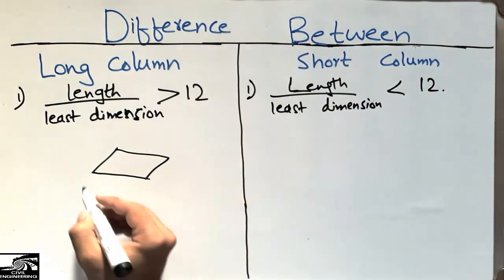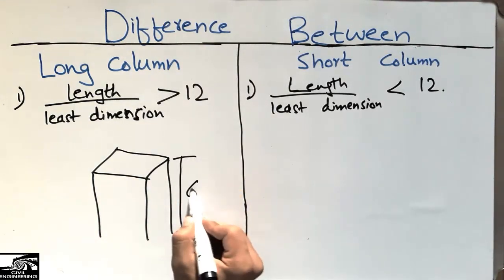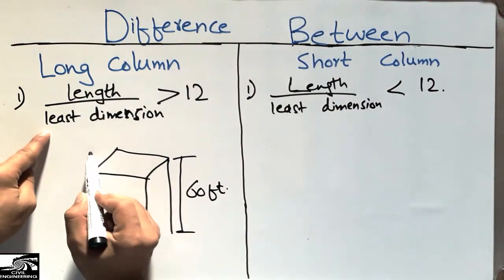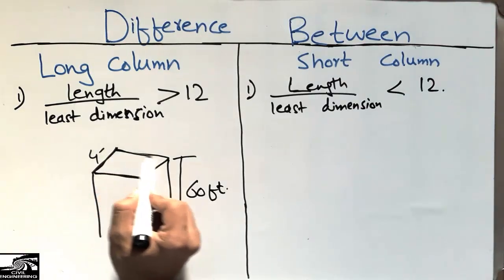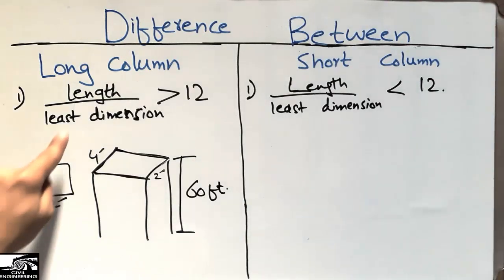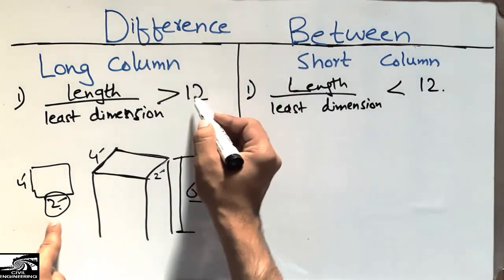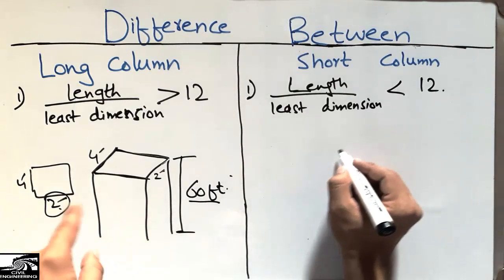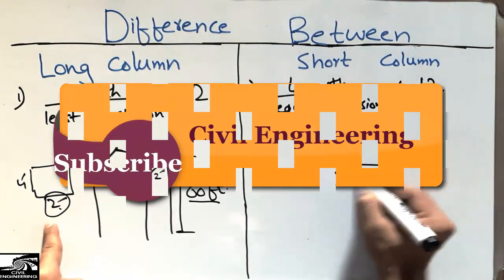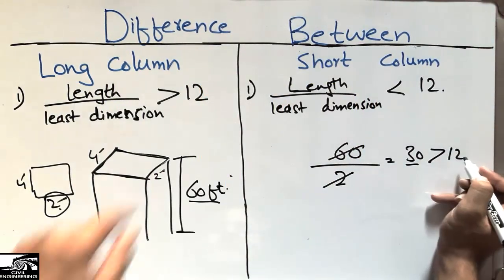Taking an example: here is a 3D column whose length is 60 feet. The least dimension of the column section is 2 feet, while the other dimension is 4 feet. Dividing the length of 60 by the least dimension of 2, we get a ratio of 30, which is greater than 12. So this column is categorized as a long column.